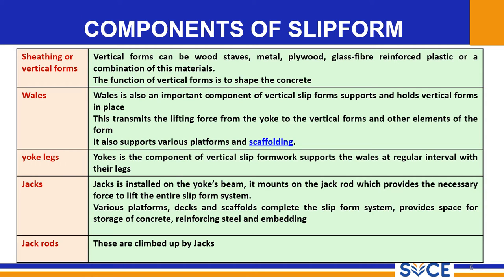The next component is the yoke legs, which is the component of the vertical slip form. It supports the base at regular intervals with its legs. Next are the jacks, which are installed at the yoke legs. The various platforms, decks, and scaffolds complete the slip form construction, which provides complete space for the storage, repositing, and embedding. The jack rods are lined up by the jacks.